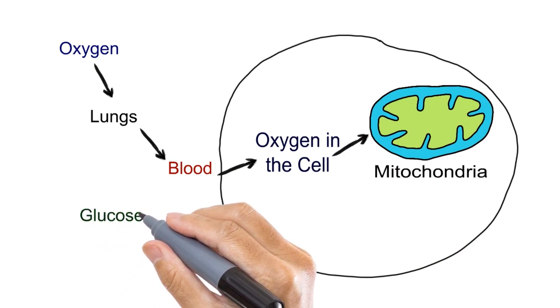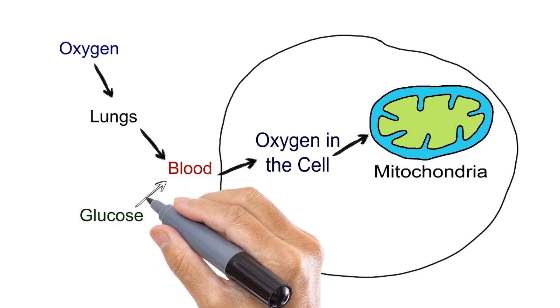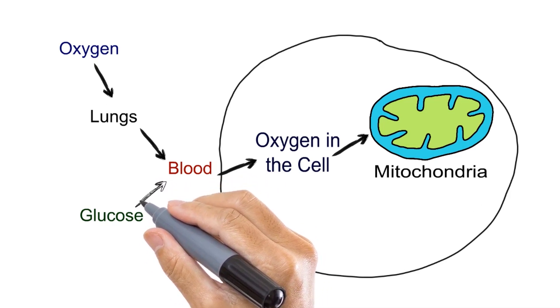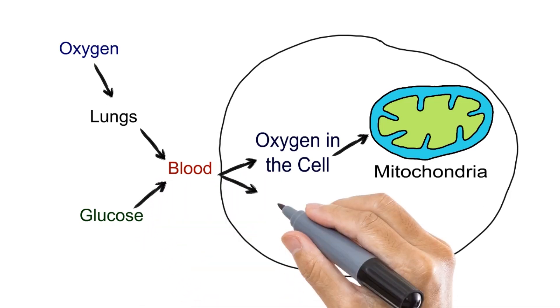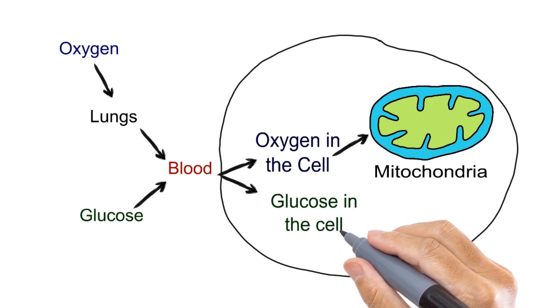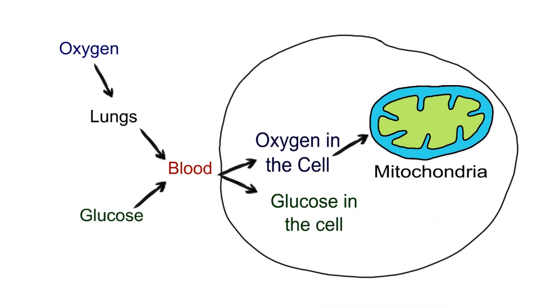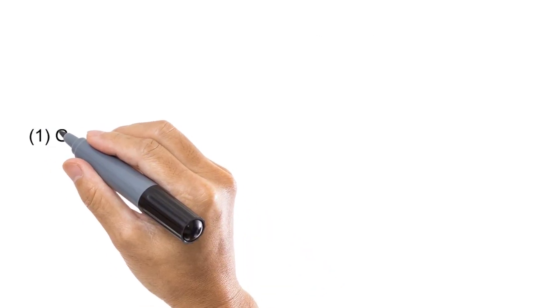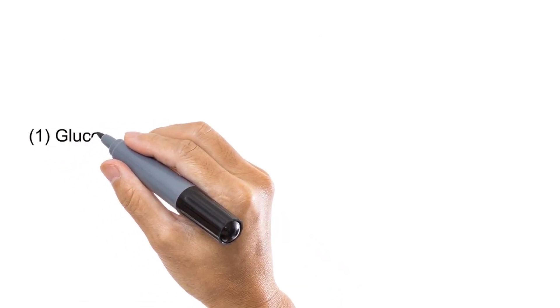The oxygen inhaled finally enters the cell and is transported to the mitochondria. Simultaneously, glucose molecules from energy drinks, food, or Glucon-D also enter the blood and are transported to the cell. Now we have two components inside the cell: glucose from food and oxygen from the air, and the process of cellular respiration begins.